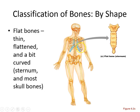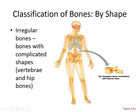Flat bones have a similar internal structure — like your sternum and lots of your skull bones. Last, irregular bones have odd shapes, like your vertebrae and your pelvic girdle, your hip bones.